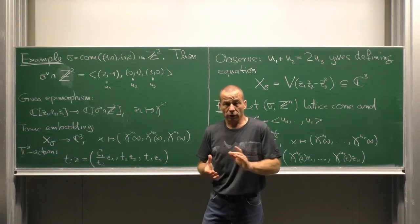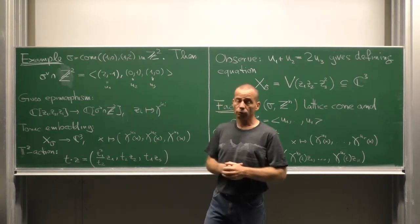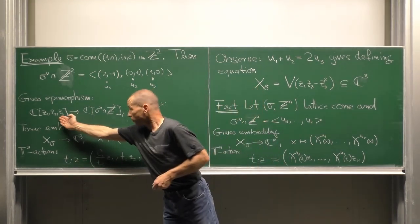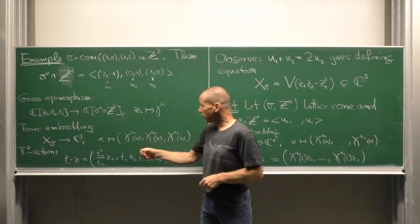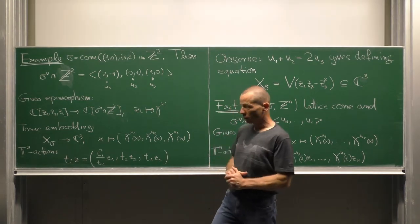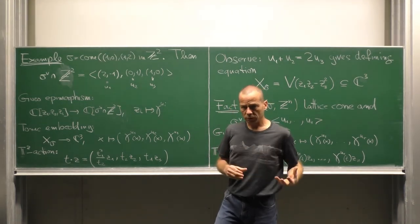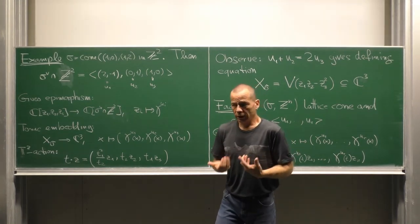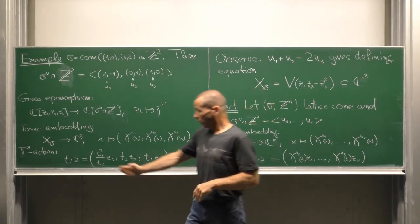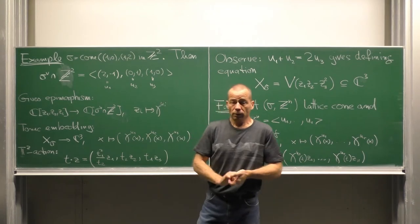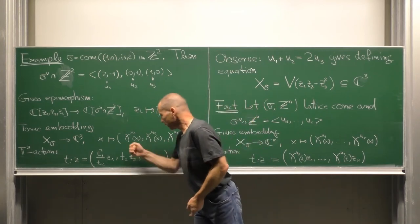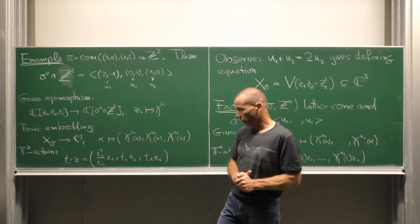Once we have generators of an algebra, this gives us an epimorphism from a polynomial ring onto that algebra. Here it is from the polynomial ring in three variables onto our algebra, sending the i-th variable to the i-th generator of the monoid algebra. Such an epimorphism from a polynomial ring gives an embedding of the associated spectra. That means in our case X_sigma, the spectrum of this monoid algebra, embeds into C^3 via the three generators of the monoid algebra.